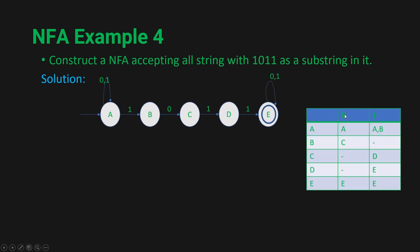Now let's look at the transition table. In state A with input 0, you go to state A itself. With input 1, you go to state A and state B. In state B with input 0, you go to state C. Input 1 is not mentioned because in an NFA you don't have to specify every input — it simply goes nowhere. In state C with input 0, nothing is mentioned since we don't have to list the dead state. With input 1, we go to state D. In state D with input 0, nothing is mentioned. With input 1, we go to state E. In state E, for both input 0 and 1, we stay in state E. This is how we construct the NFA for accepting all strings with 1,0,1,1 as a substring.